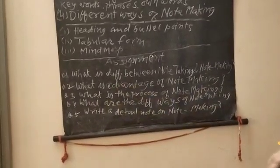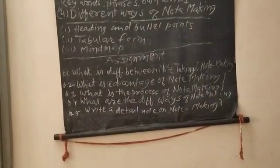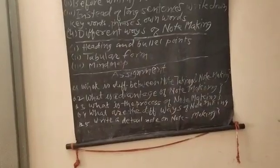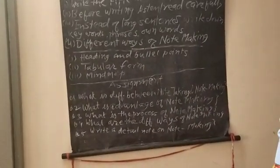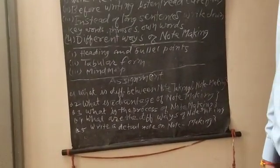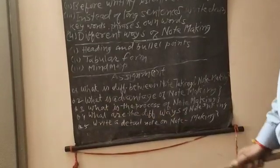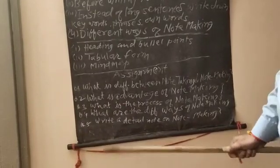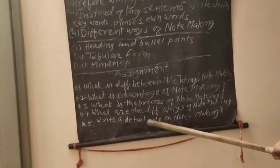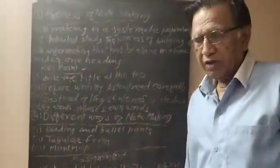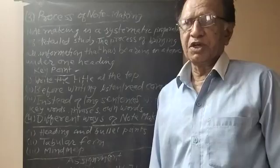And fourth question, what are the different ways of note making? These are the three forms: heading and bullet form, tabular form, and mind map. And fifth question is a detailed question, write a detailed note on note making. Thank you, have a nice day my dear people teachers.